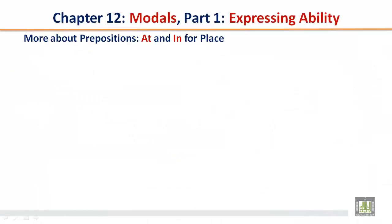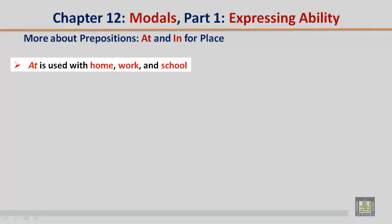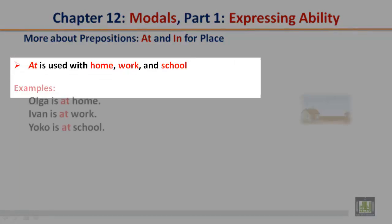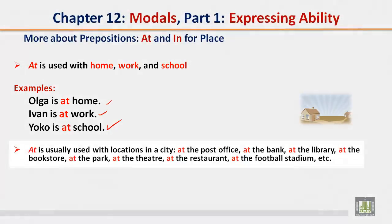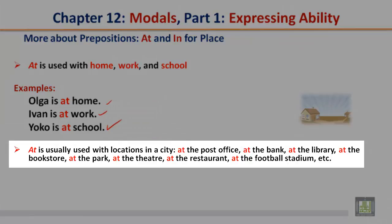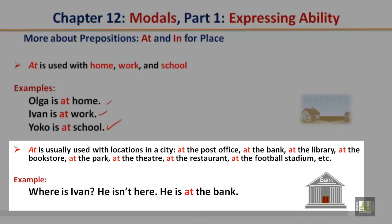More about prepositions: at and in for place. At is used with home, work, and school: Olga is at home; Ivan is at work; Yoga is at school. At is usually used with locations in a city: at the post office, at the bank, at the library, at the bookstore, at the park, at the theater, at the restaurant, at the football stadium. Example: Where is Ivan? He isn't here — he is at the bank.